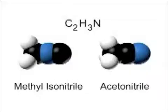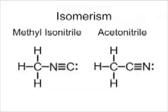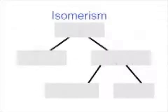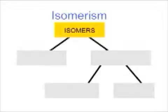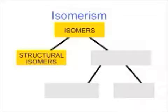The molecules methyl isonitrile and acetonitrile have the same molecular formula, C2H3N. However, they differ in the bonding arrangements of the atoms. They are examples of isomers, compounds with the same molecular formula that are not identical. Isomers that have different bonds or differ in the locations of bonds within the molecule are called configurational or structural isomers. Methyl isonitrile and acetonitrile are examples of structural isomers.